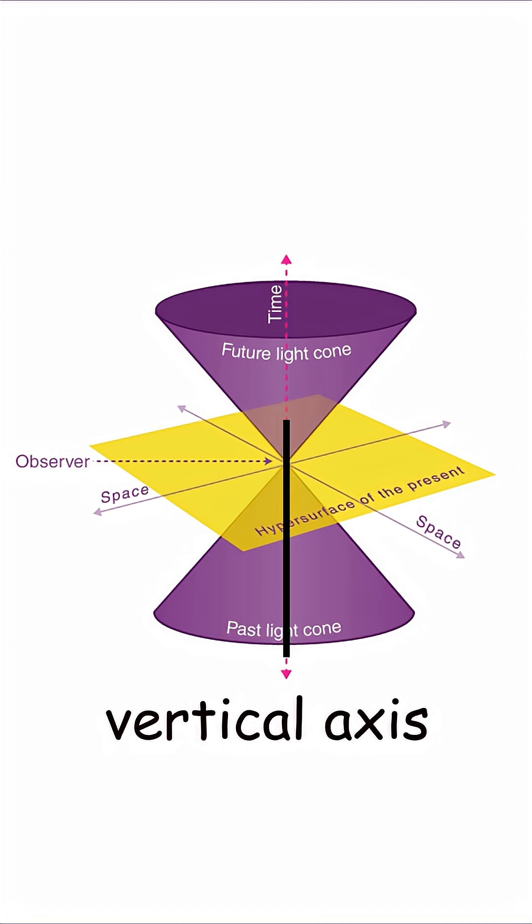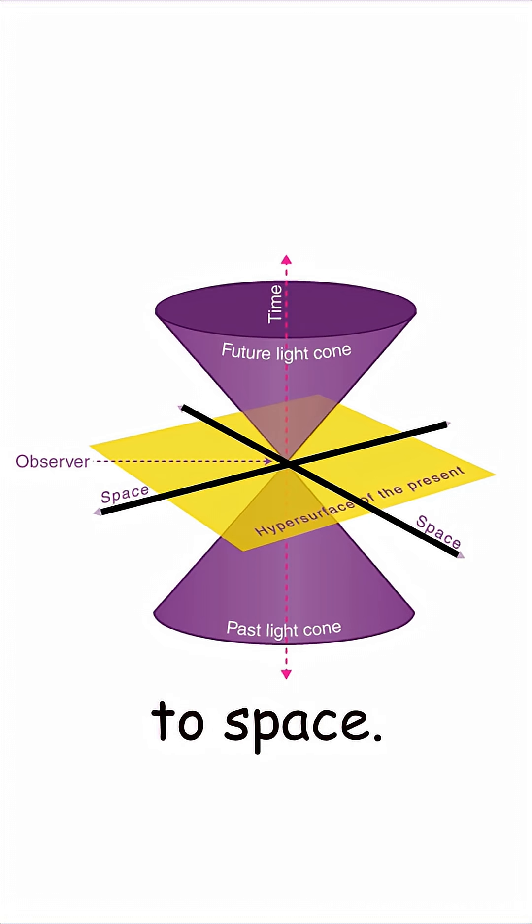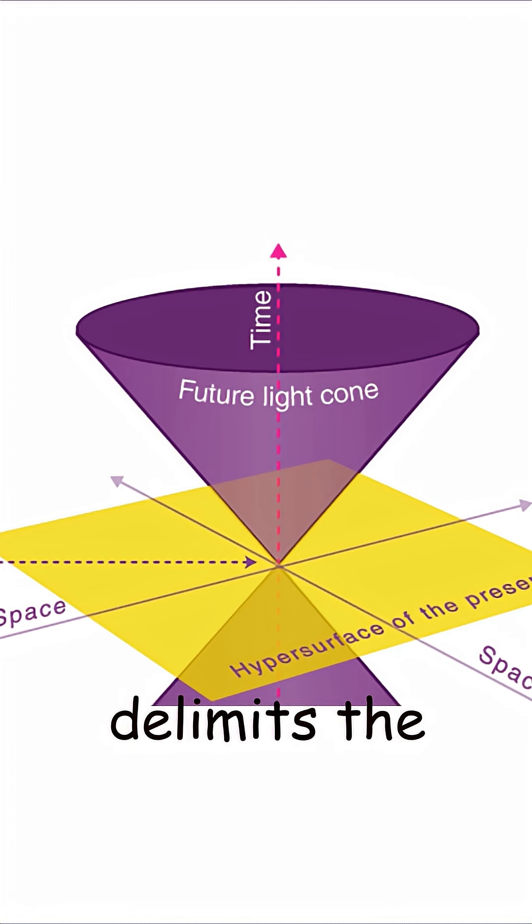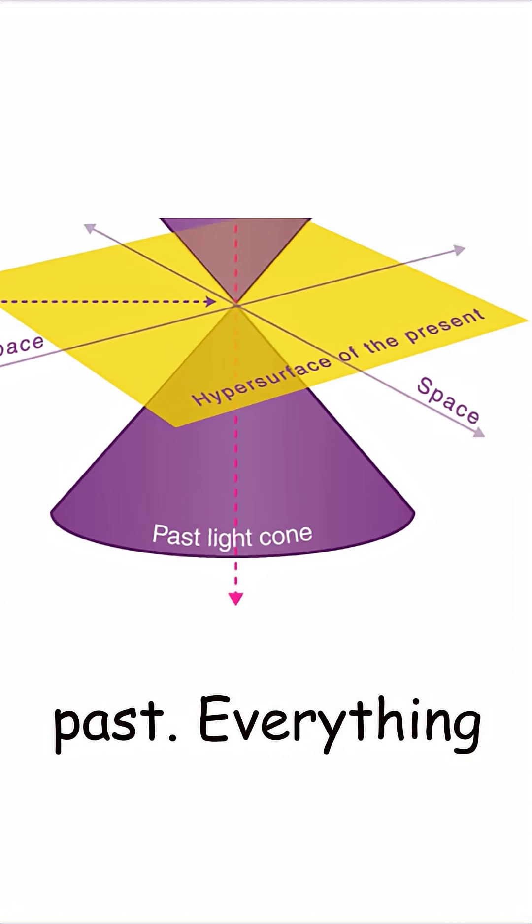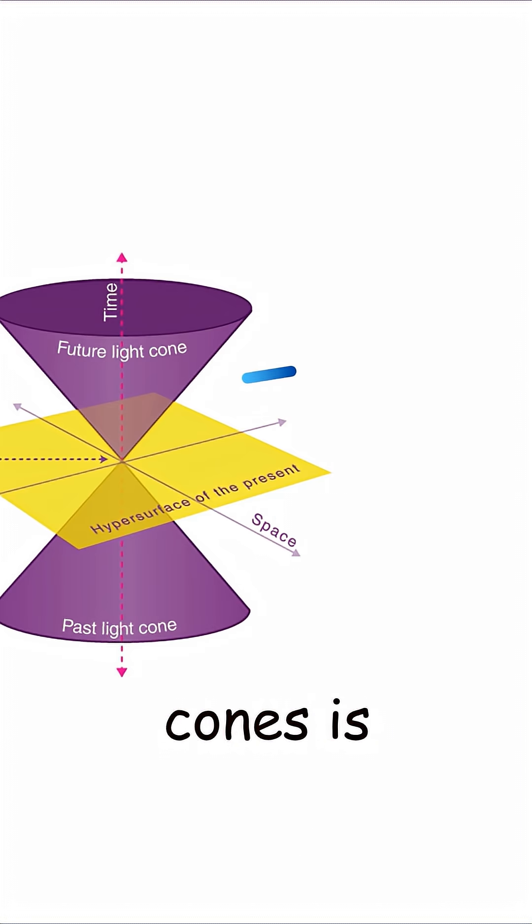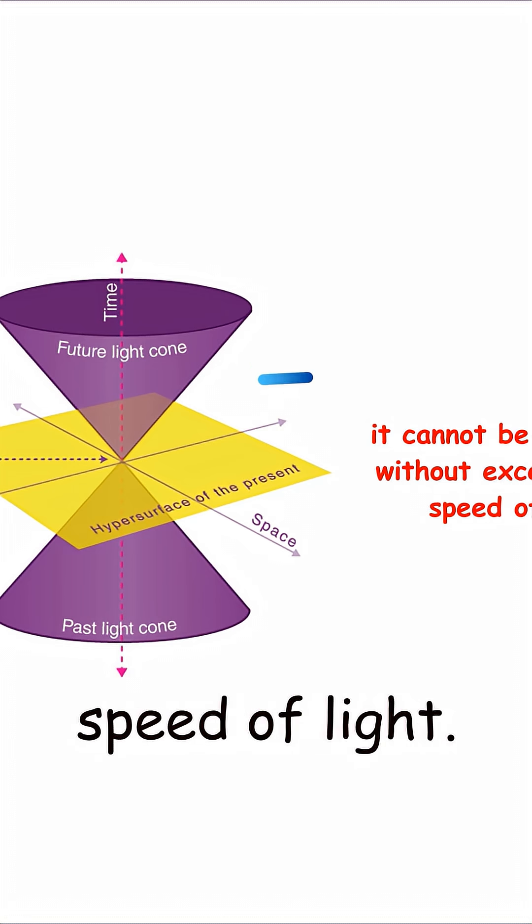The light cone's vertical axis corresponds to time and the horizontal axis to space. The upper cone delimits the events that can occur in the observer's future, while the lower cone represents the events of their past. Everything that lies outside these cones is spatially separated and cannot be causally connected without exceeding the speed of light.